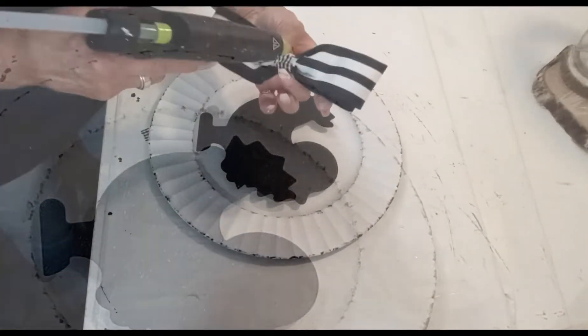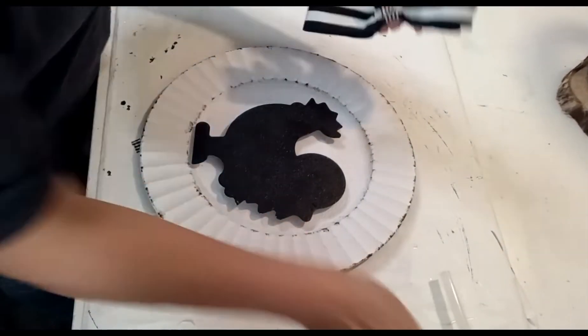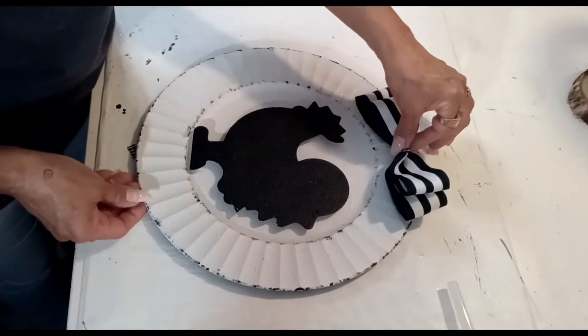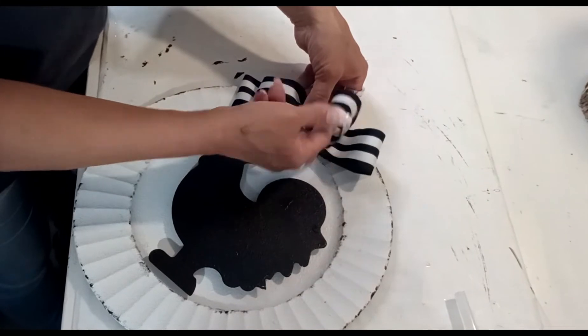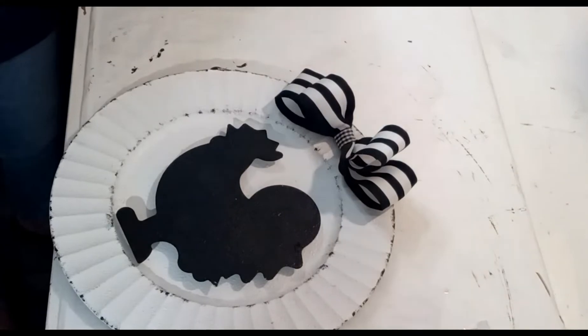Taking a little bit of hot glue, let's go ahead and put this beautiful ribbon right here. This is coming out absolutely gorgeous. I am loving this beautiful farmhouse plate.